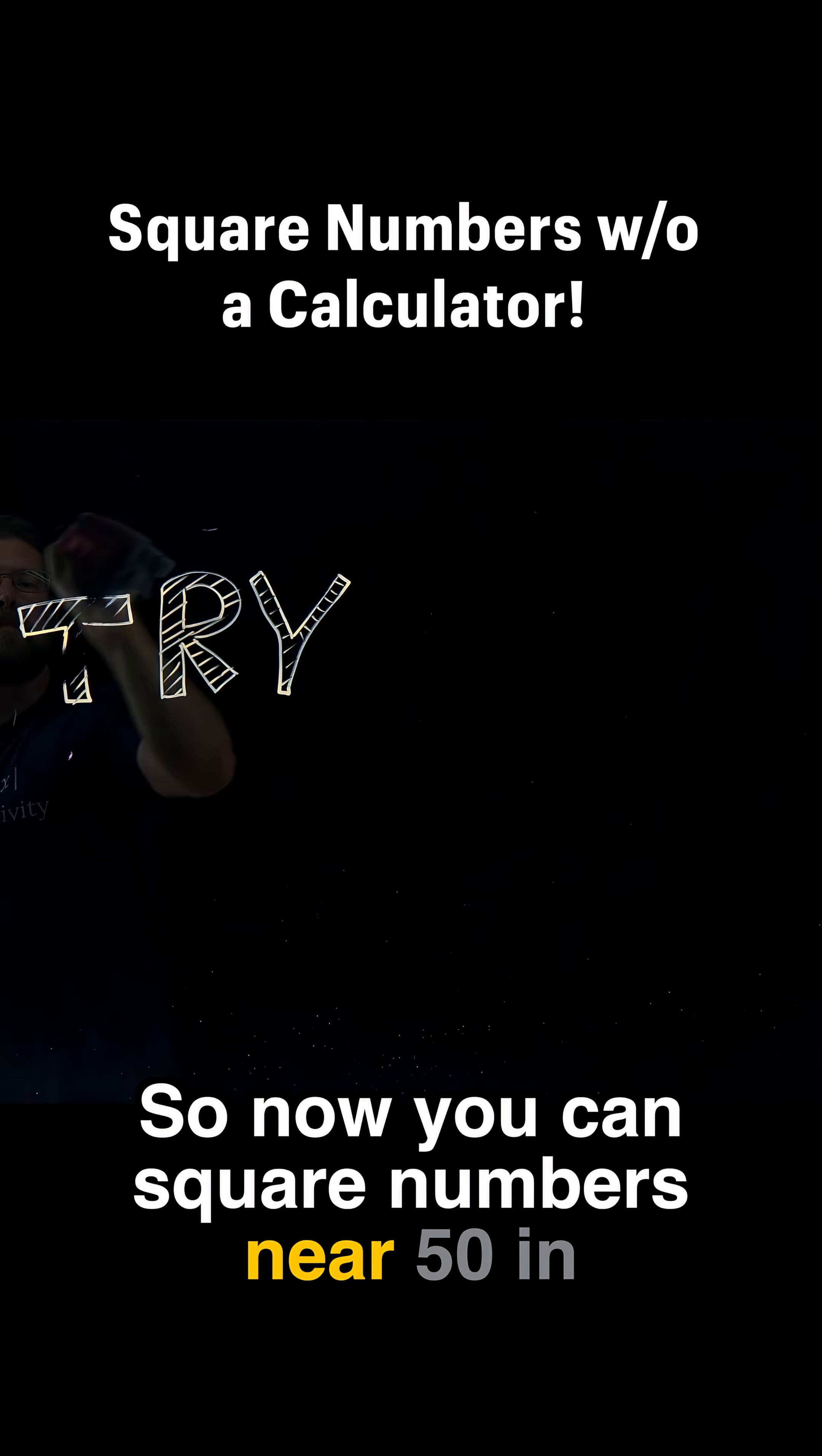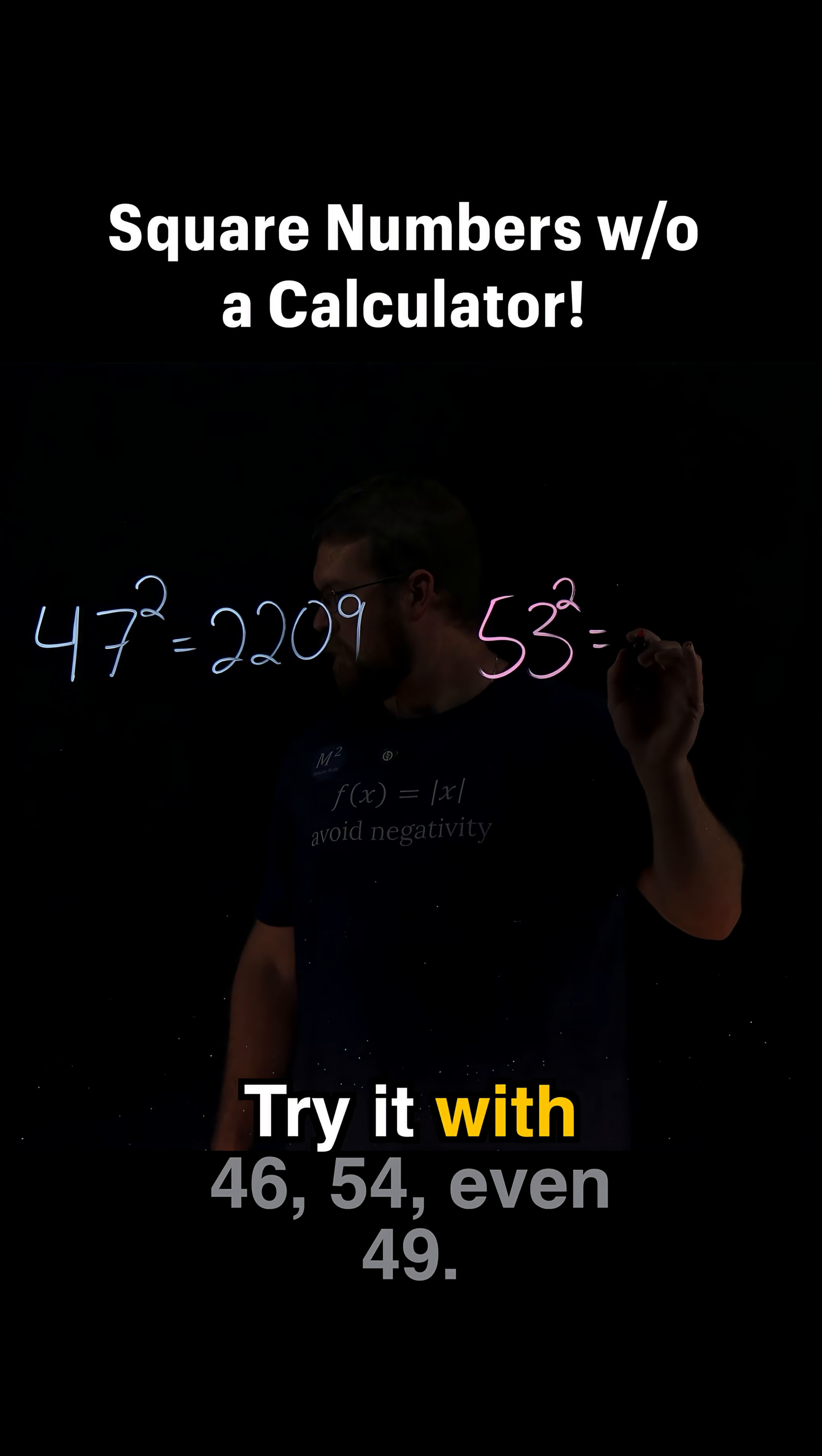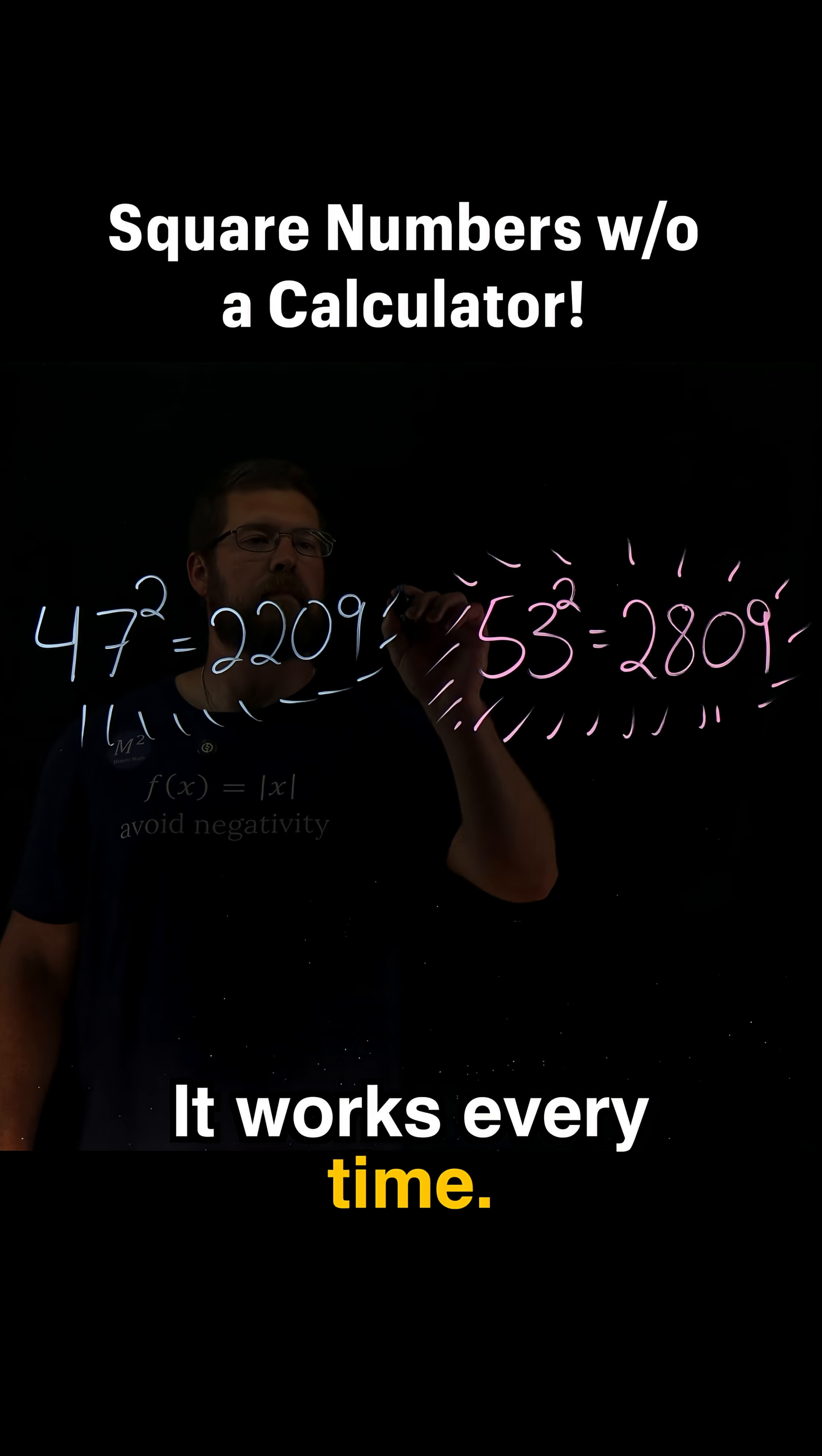So now you can square numbers near 50 in seconds. No calculator needed. Try it with 46, 54, even 49. It works every time.